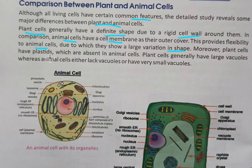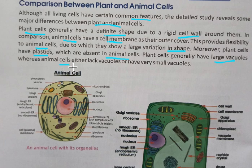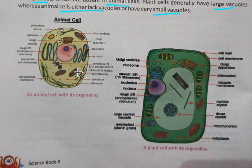Plant cells also have plastids: chloroplasts, which contain the green pigment, and chromoplasts, which contain colorful pigments found in flowers. Plant cells generally have large vacuoles, while in animal cells the vacuoles are quite small or may be absent in many cells.